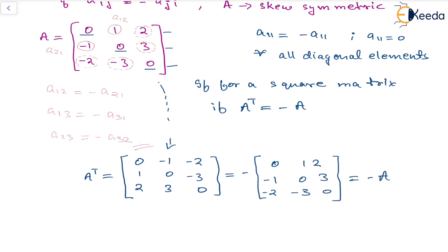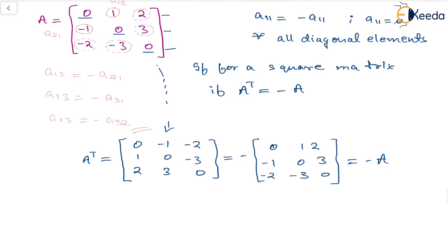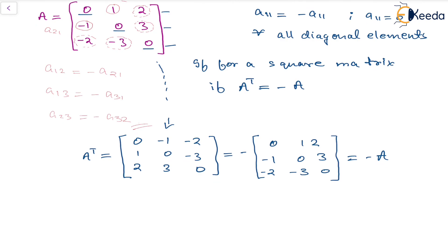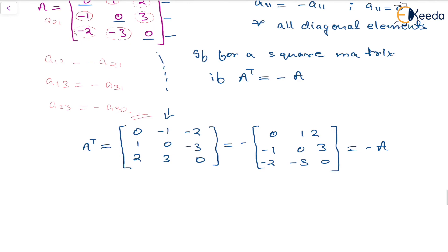So we can see that A transpose is negative of matrix A. So this is how we can define skew-symmetric matrix, that is A transpose is negative of A. So this was all about the basics of skew-symmetric and symmetric matrix. We can try solving questions on this of course. Thank you.